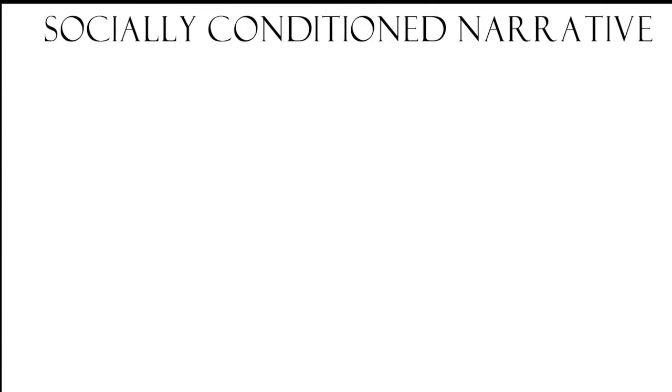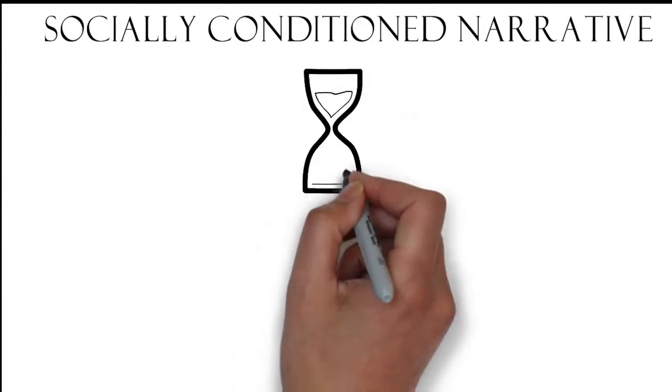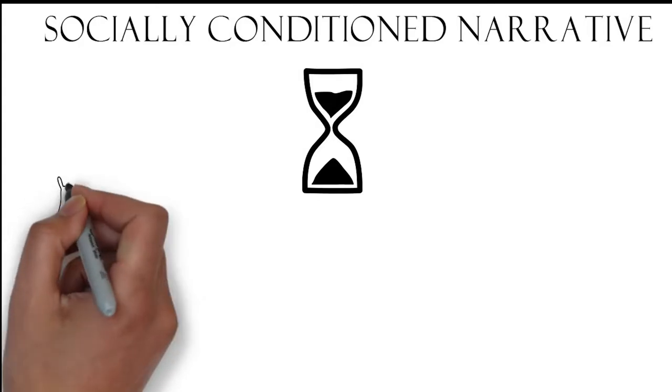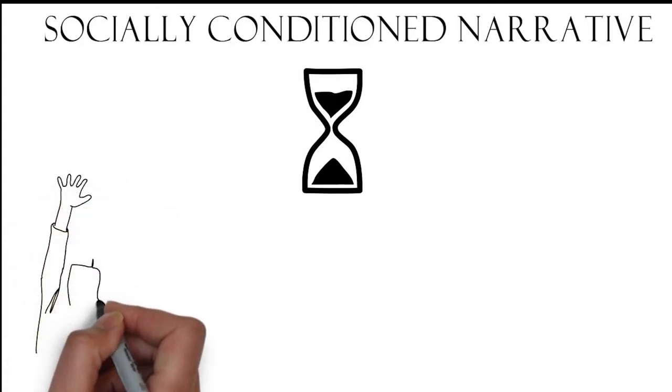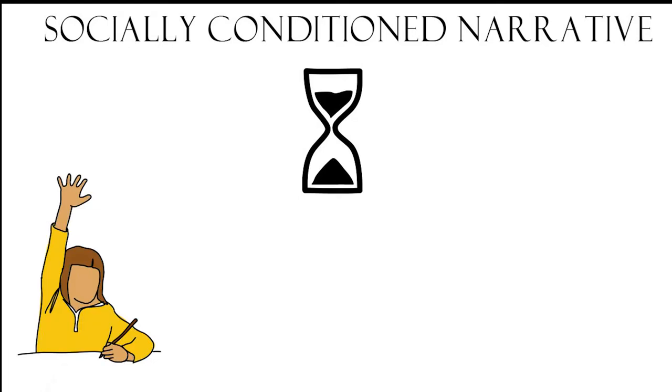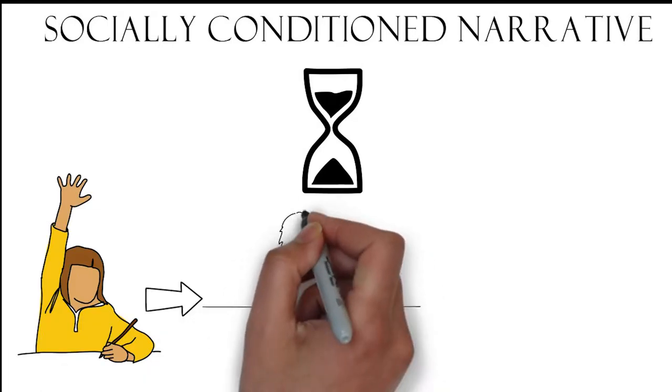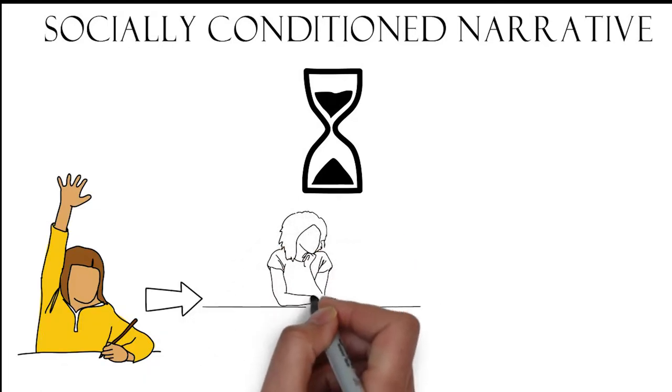Our script is the socially conditioned narrative that we have been indoctrinated into since childhood. It consists of many fallacies, fallacies such as to succeed in life, you need to go to school, you need to get good grades, you need to receive a college degree.